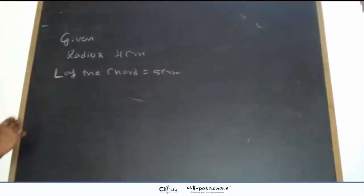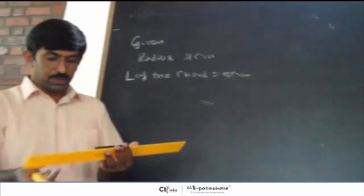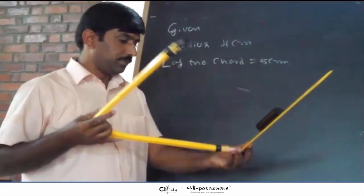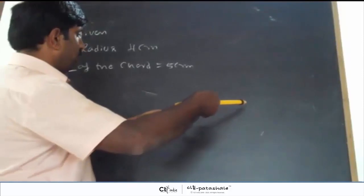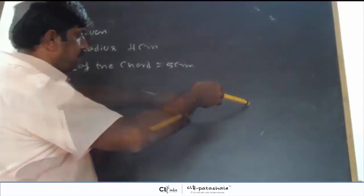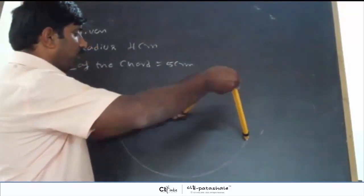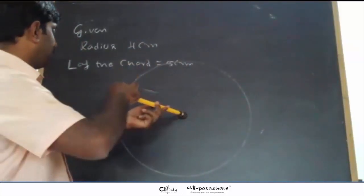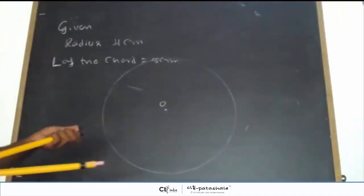First we construct the circle. Take the ruler and compass and draw the 4 cm radius circle.